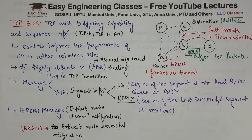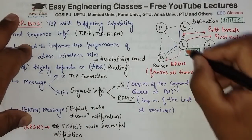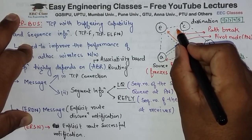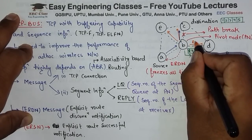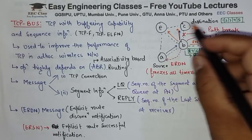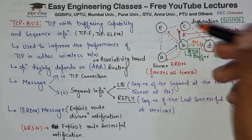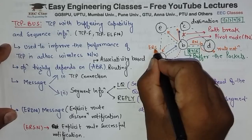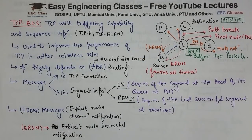Then what happens is this pivot node B will send a route notification packet to all the other downstream nodes — matlab ki woh E tak, D tak aur C tak packet bhejega for the alternate route. Once the route notification is done — for example E ne route notify kar diya ki mere paas C tak jaane ka raasta hai — toh B will send an ERSN packet to the source, aur A ko batayega ki mere paas C tak jaane ke liye ek route hai.